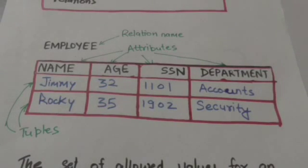A relation is considered as a table of values, and a row in a table represents a fact corresponding to a real world entity or relationship. The name of the table and the name of the columns are used to help interpret the meaning of the values in each row of the table.